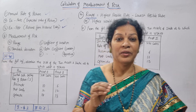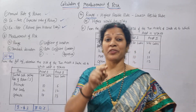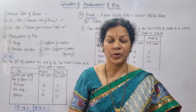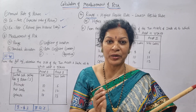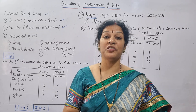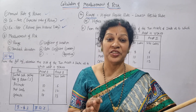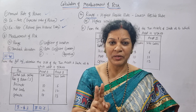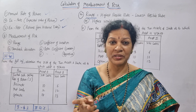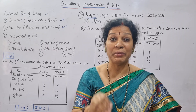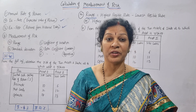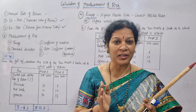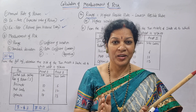When do we use range as a measure of risk? Whenever two companies' data is given, you find the range for each and then compare them. Range is used from a comparison point of view. They won't ask you to just 'calculate the range' directly — whenever two companies' data is given and you're asked which company to recommend from a risk and return point of view, that's when you calculate range.